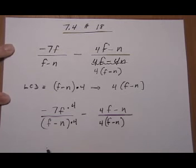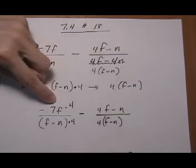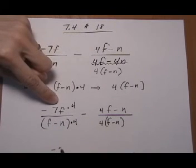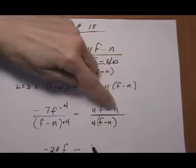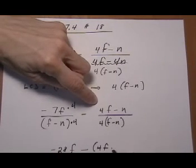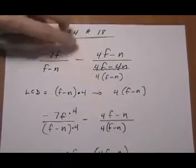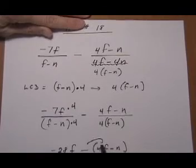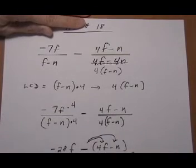And this gives us common denominator, so we keep the denominator four times F minus N and go right across the top for the numerators. We have minus 28F take away, and I'm going to put this in parentheses here because I'm taking away the entire second numerator. So the parentheses remind me that I have to distribute the minus sign.